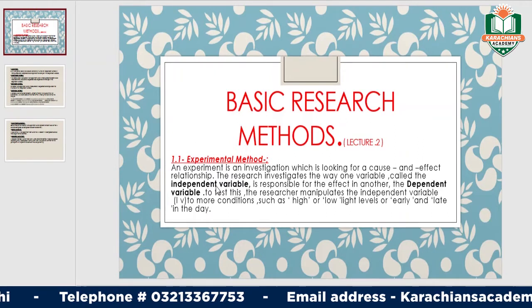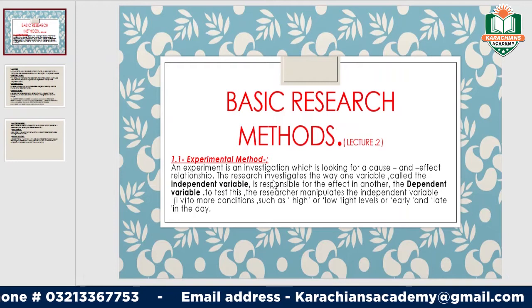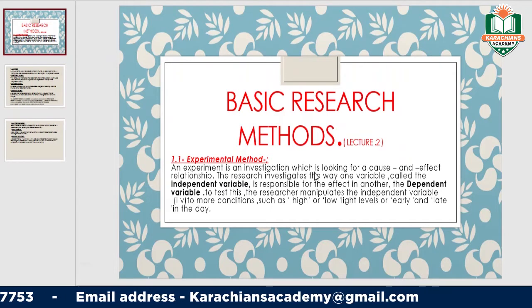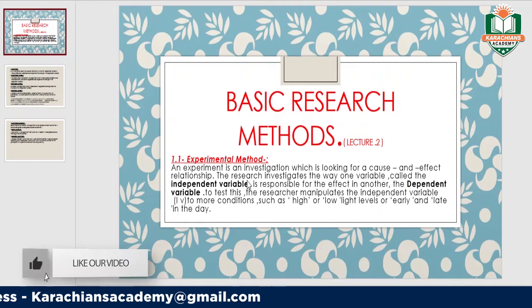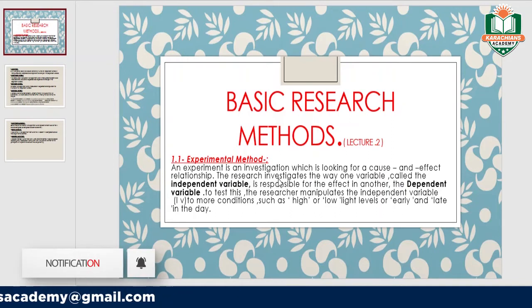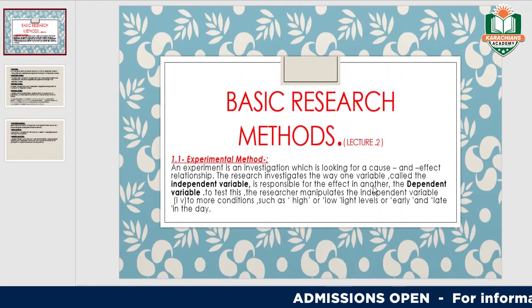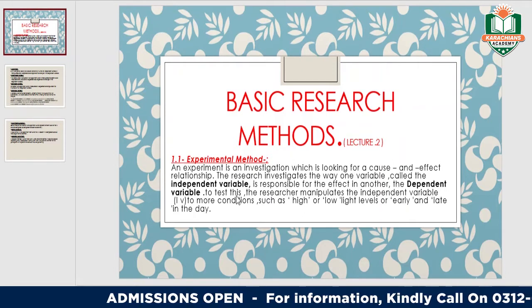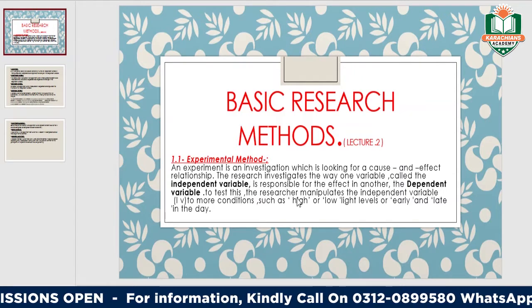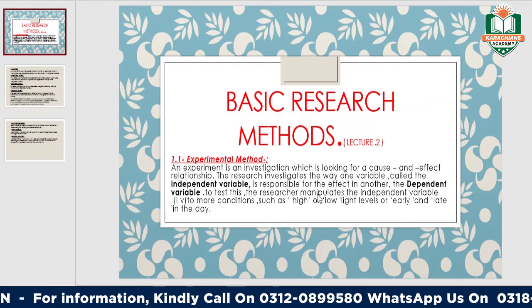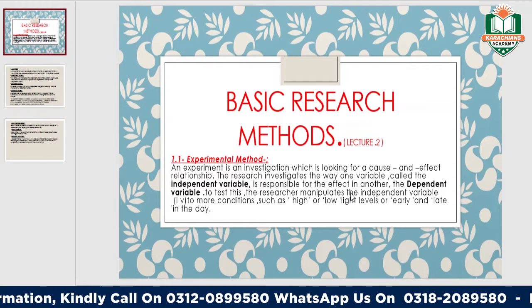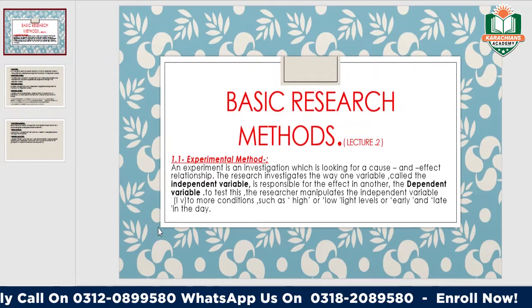The first method is the experimental method. An experiment is an investigation which is looking for a cause and effect relationship. The research investigates the way one variable, called the independent variable, is responsible for the effect in another, the dependent variable.